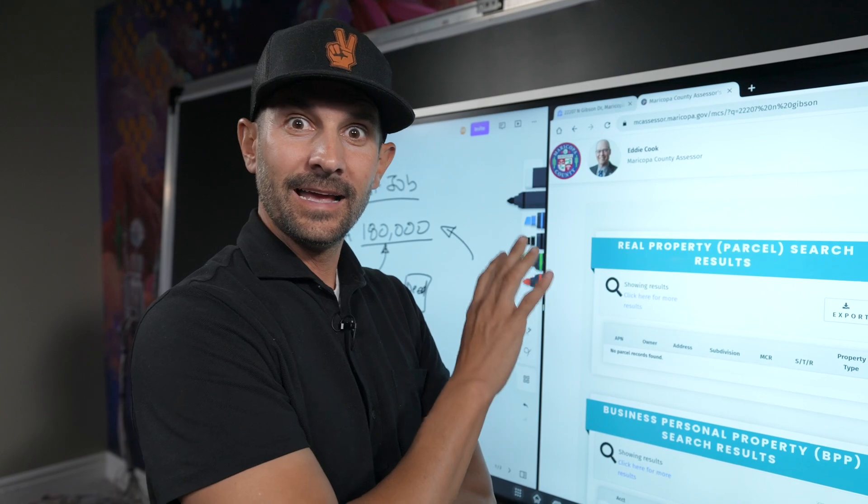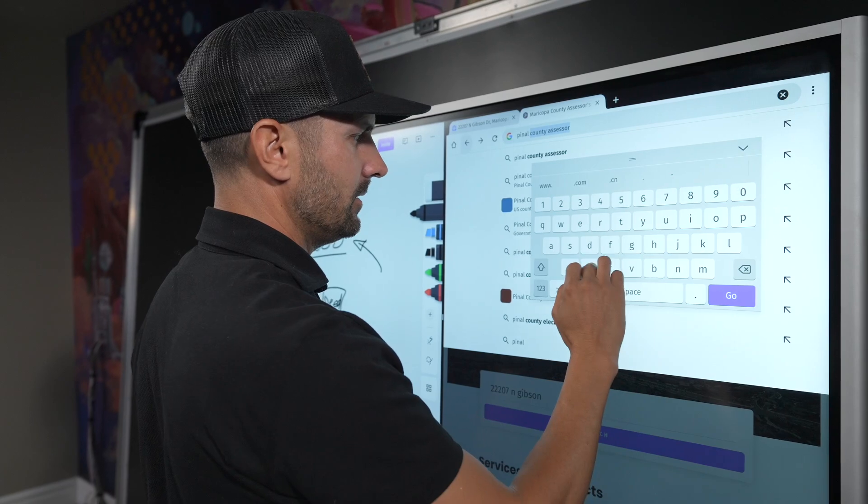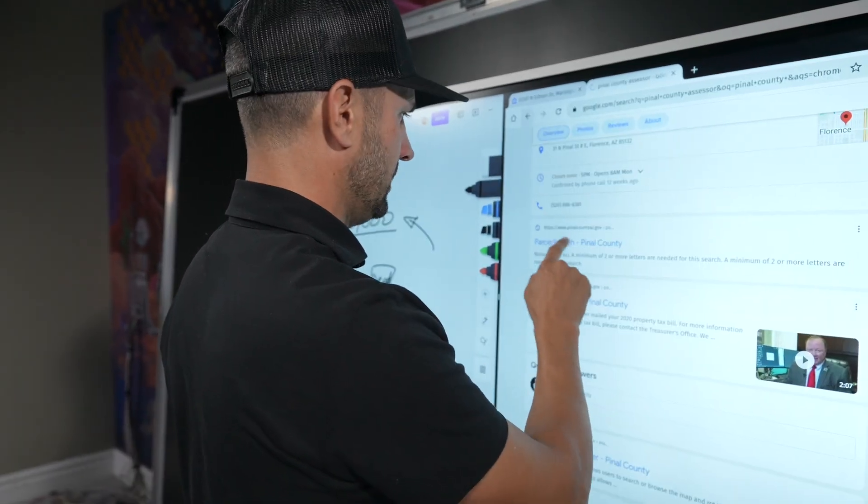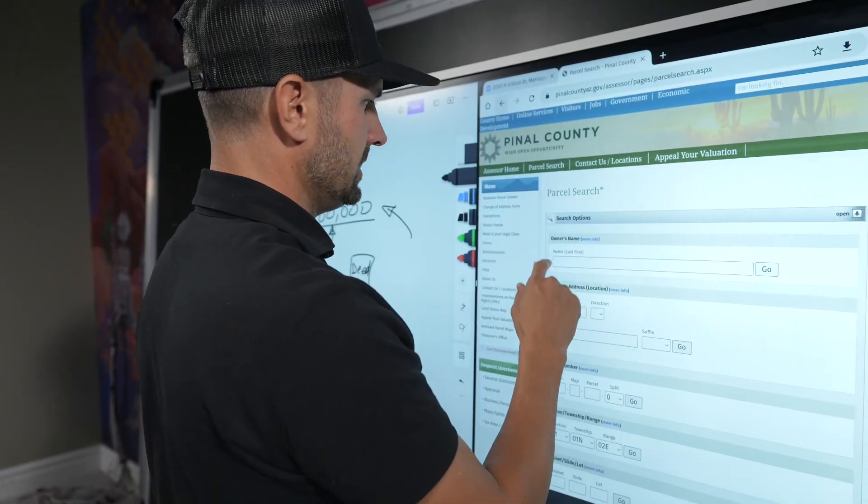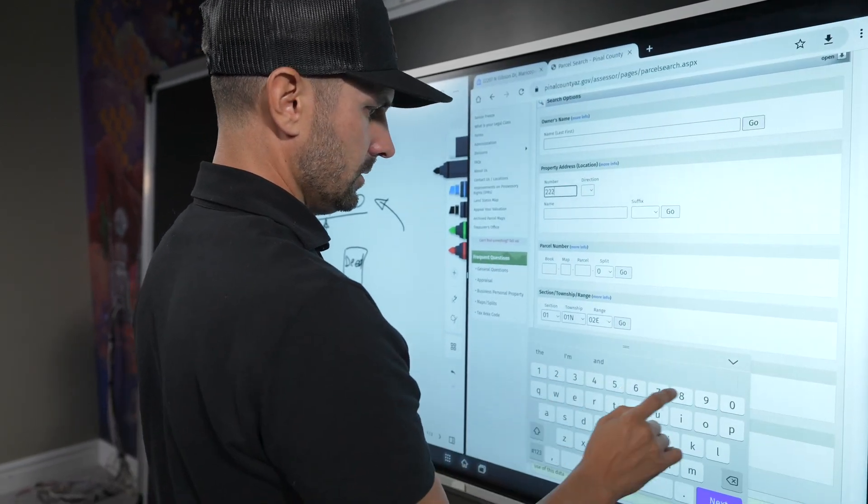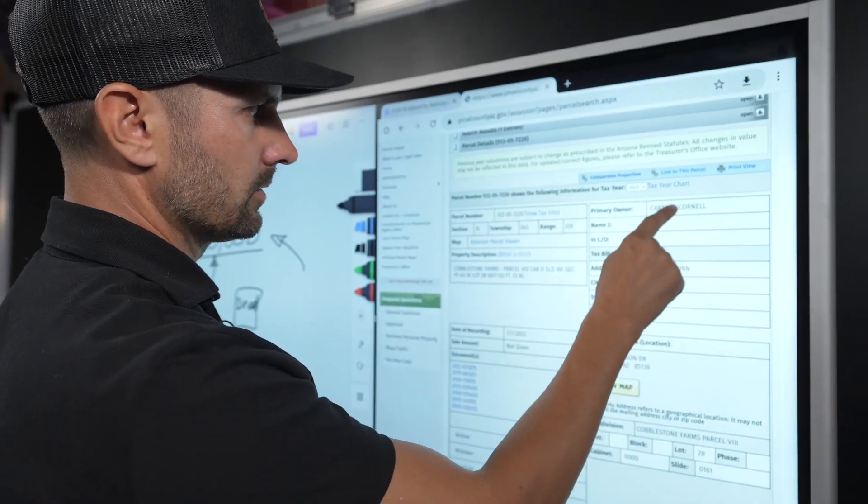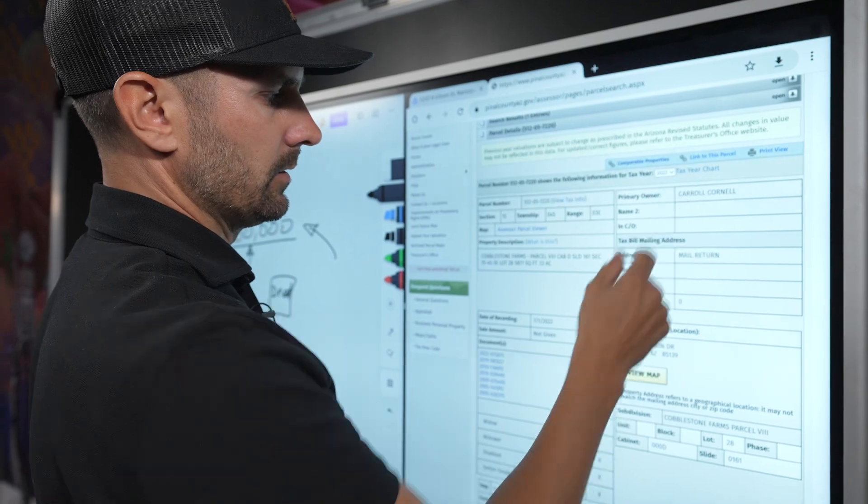If I type in the address, 22207 North Gibson, I'd be curious to see if it actually pulls up fast enough. Oh, you know why? Because it's not Maricopa. It's the city of Maricopa, but it's not in the county of Maricopa. It's in Pinal County. Pinal County parcel search.